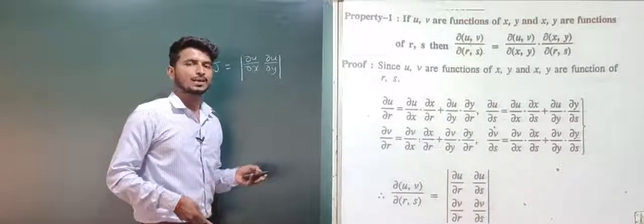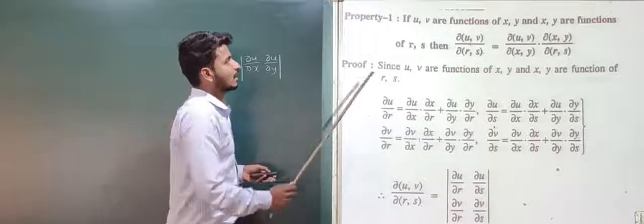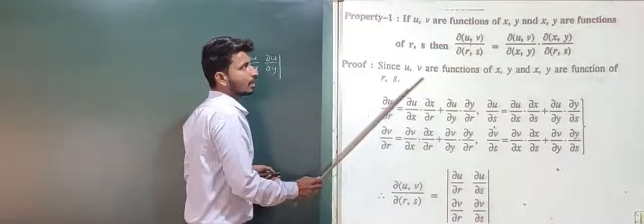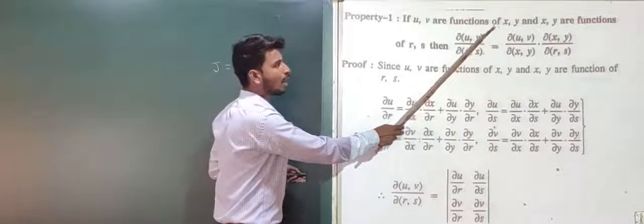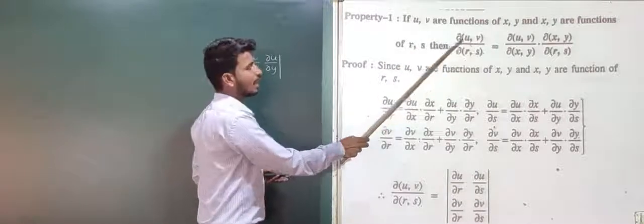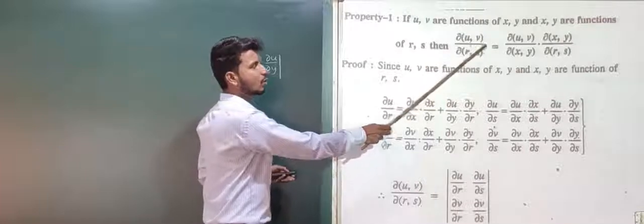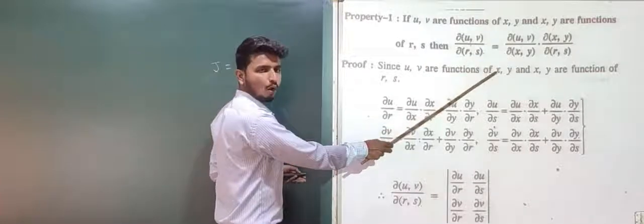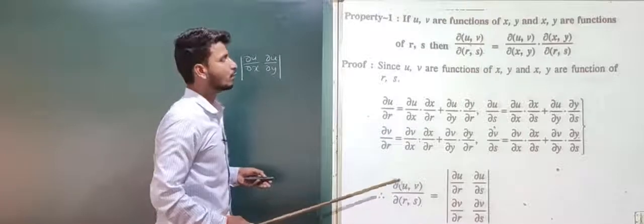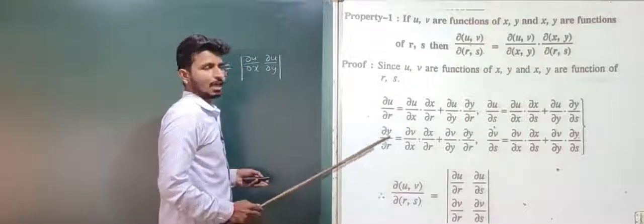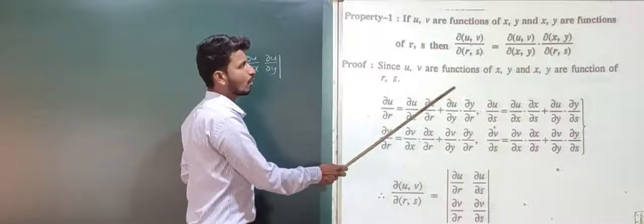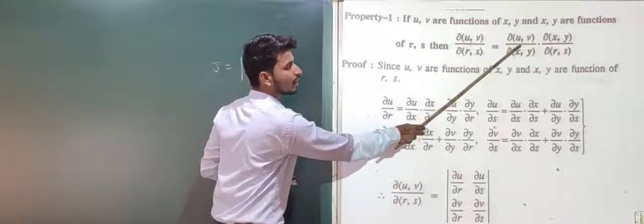Next we will study the Jacobian properties. The first property states: if u and v are functions of x and y, and x and y are functions of r and s, then we have to prove that ∂(u,v)/∂(r,s) = ∂(u,v)/∂(x,y) × ∂(x,y)/∂(r,s). In the proof we need to show LHS equals RHS.